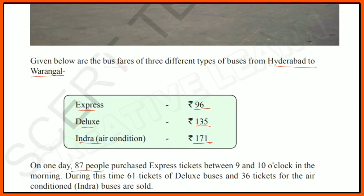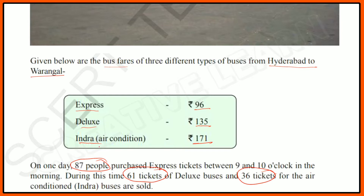On one day, 87 people purchased express tickets between 9 and 10 o'clock in the morning. During this time, 61 tickets of deluxe buses and 36 tickets for the air condition buses were also sold. So: Express — 87 tickets, Deluxe — 61 tickets, Indra — 36 tickets.